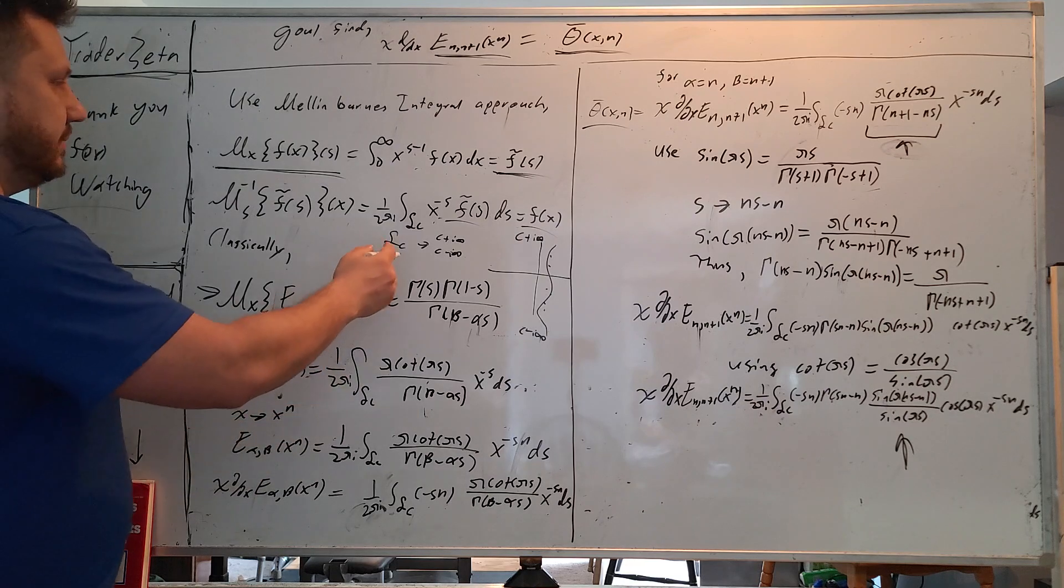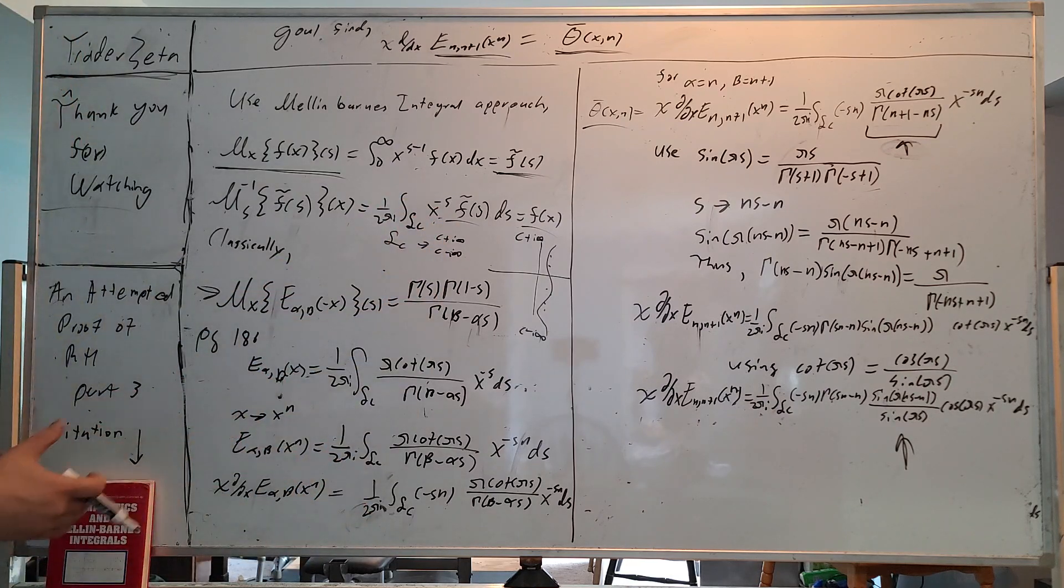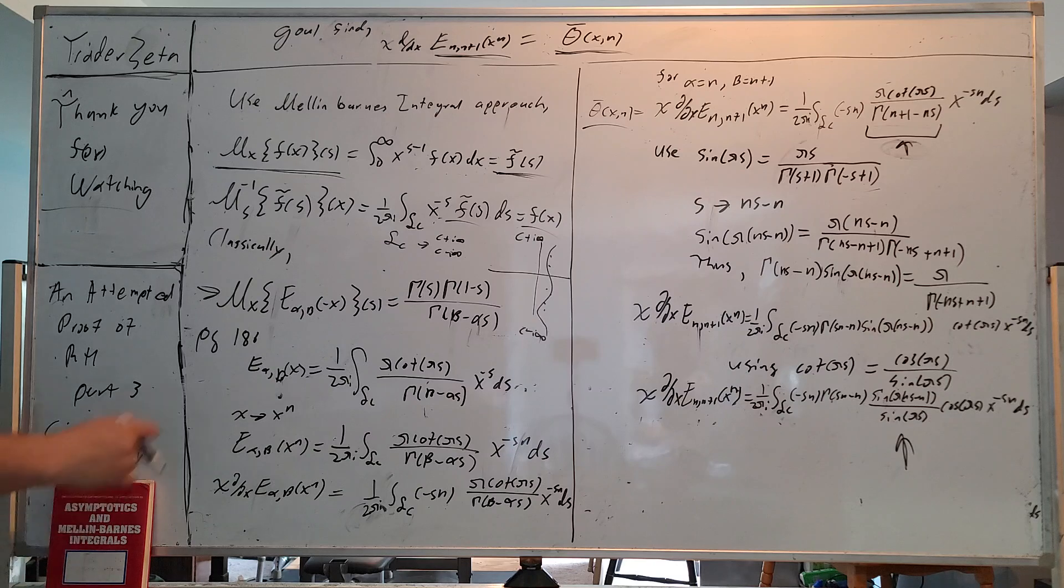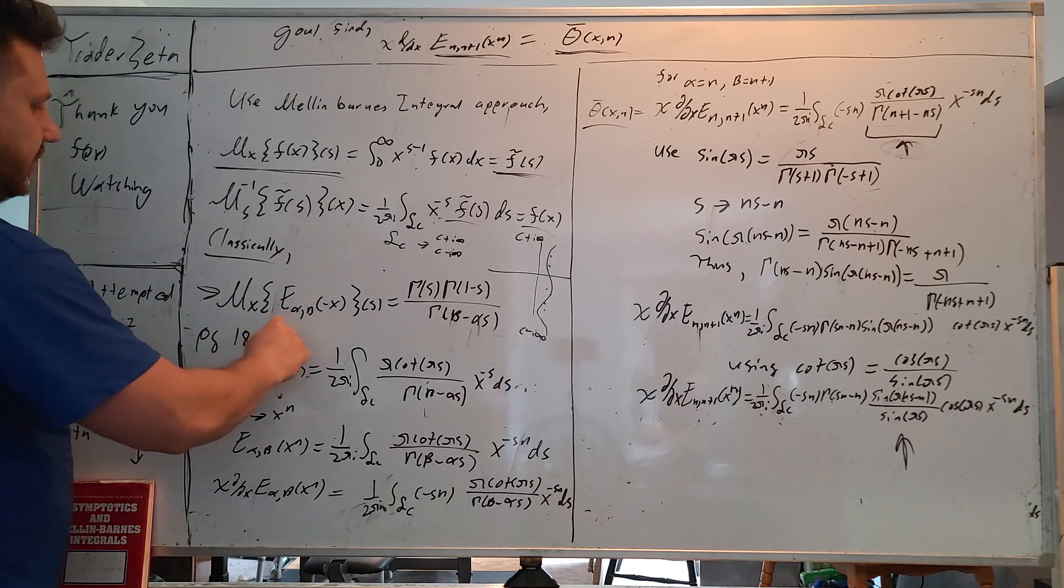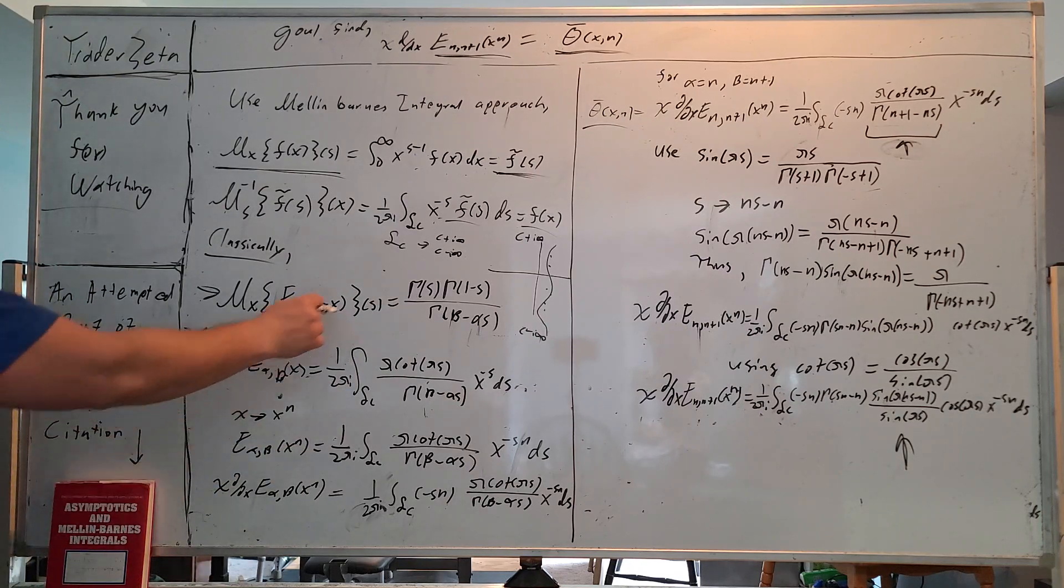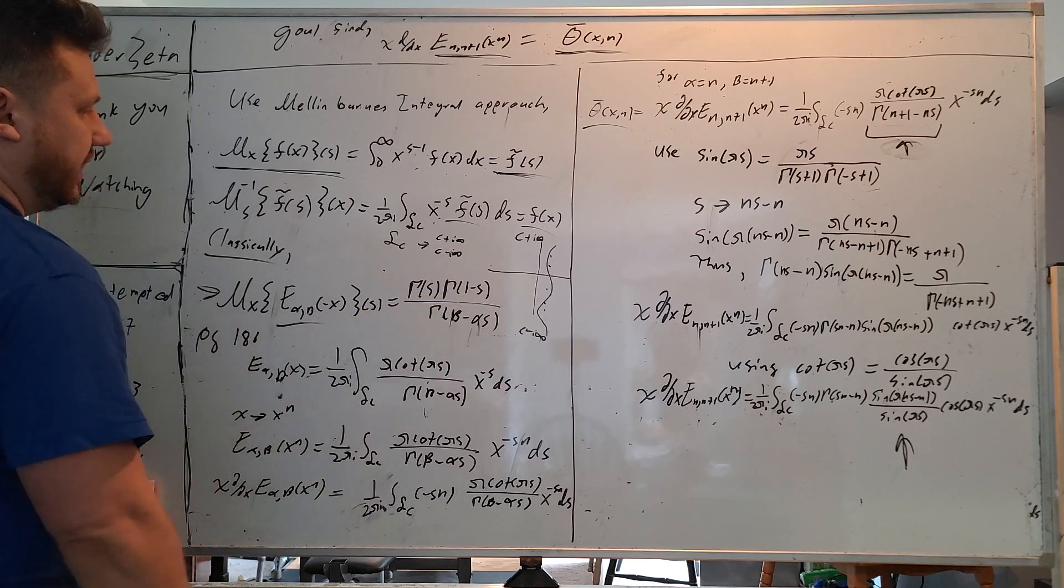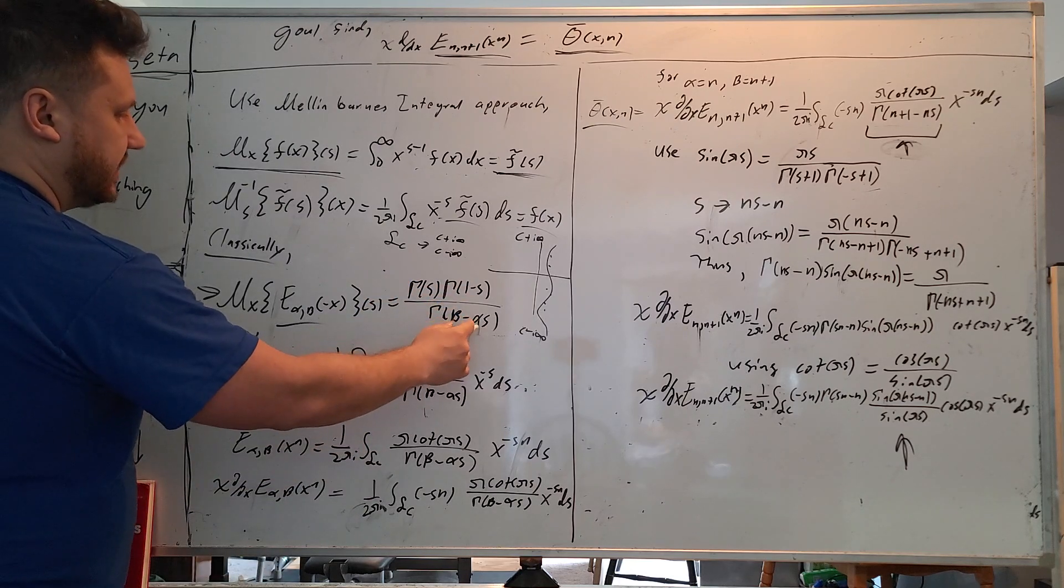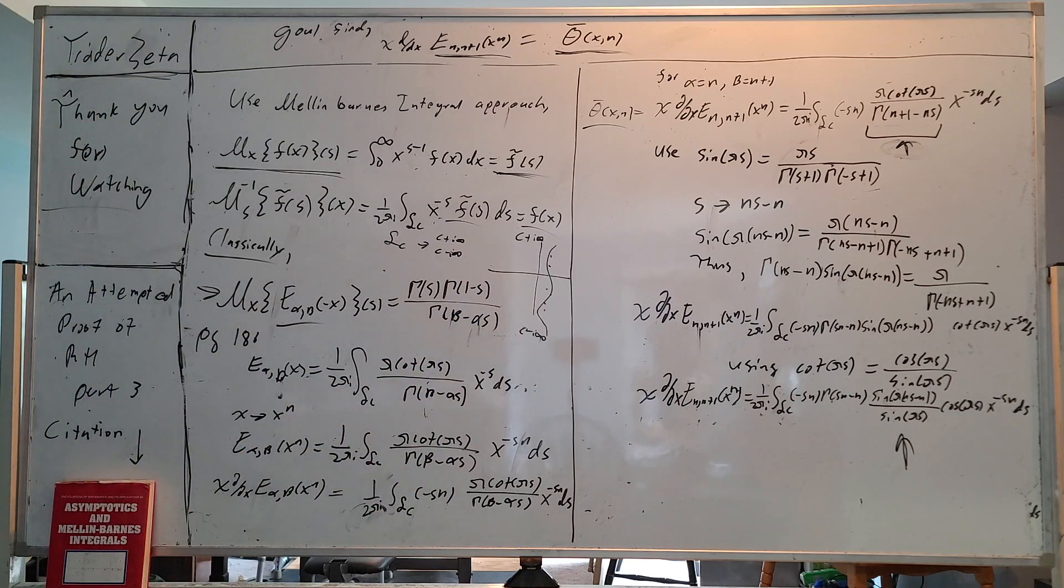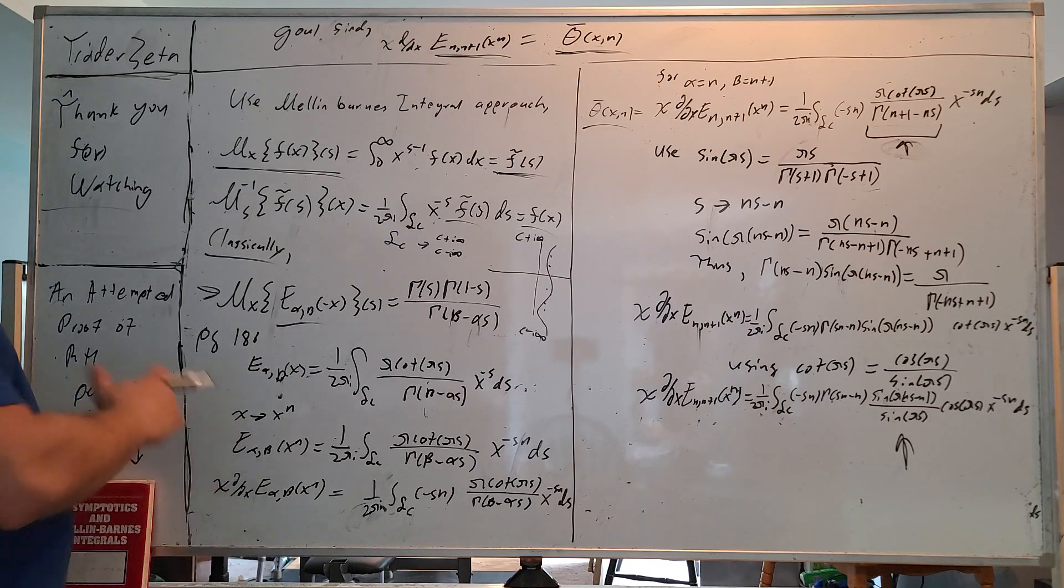This is kind of a Mellon-Barnes integral. This form is very nice for our use. Classically, we have a Mellon transform of a Mittag-Leffler function at negative x going to s. That transform results in gamma of s, gamma 1 minus s divided by gamma beta minus alpha of s. This result you can see in many different papers. It's a very well-known result.